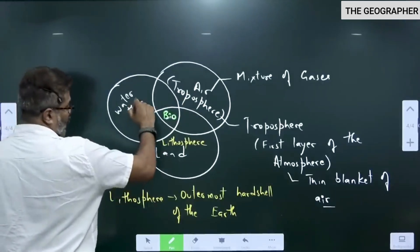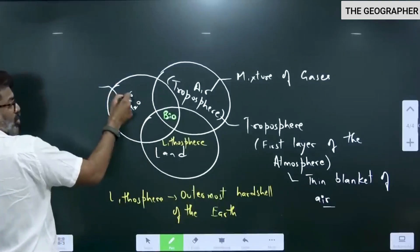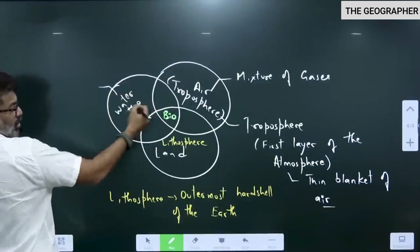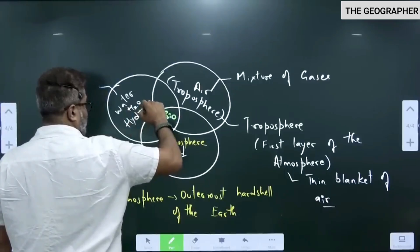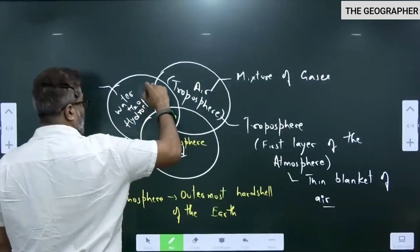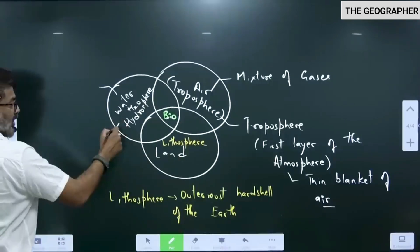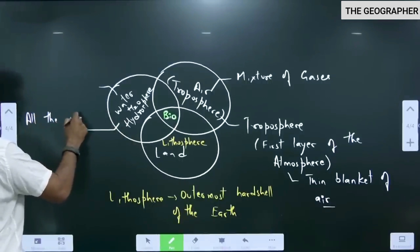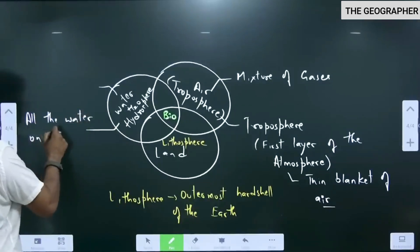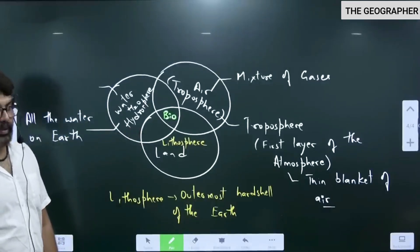Water is H2O, dihydrogen oxide. Two hydrogen atom and one oxygen atom. All the water on earth we study under the topic hydrosphere. All the water on earth comes under the word hydrosphere.